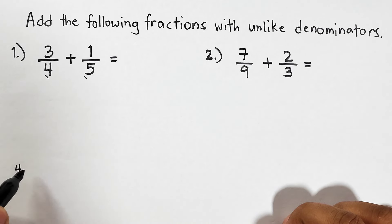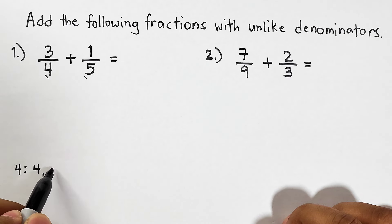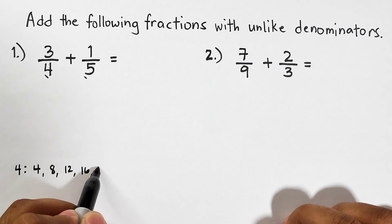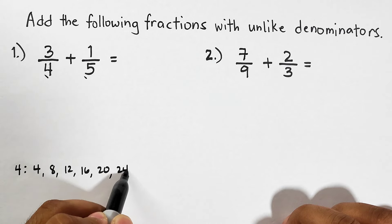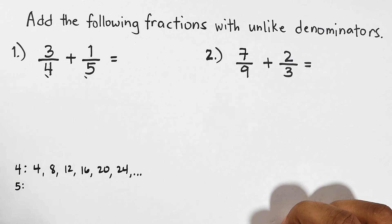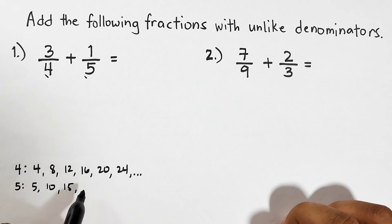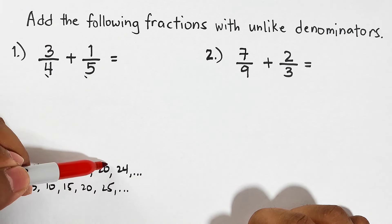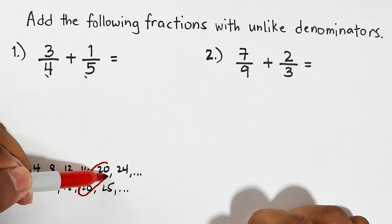For four, we list down all the multiples: four, eight, twelve, sixteen, twenty, twenty-four, and so on. For five, the multiples are five, ten, fifteen, twenty, twenty-five, and so on. We choose the least common multiple between the two numbers, which is twenty.